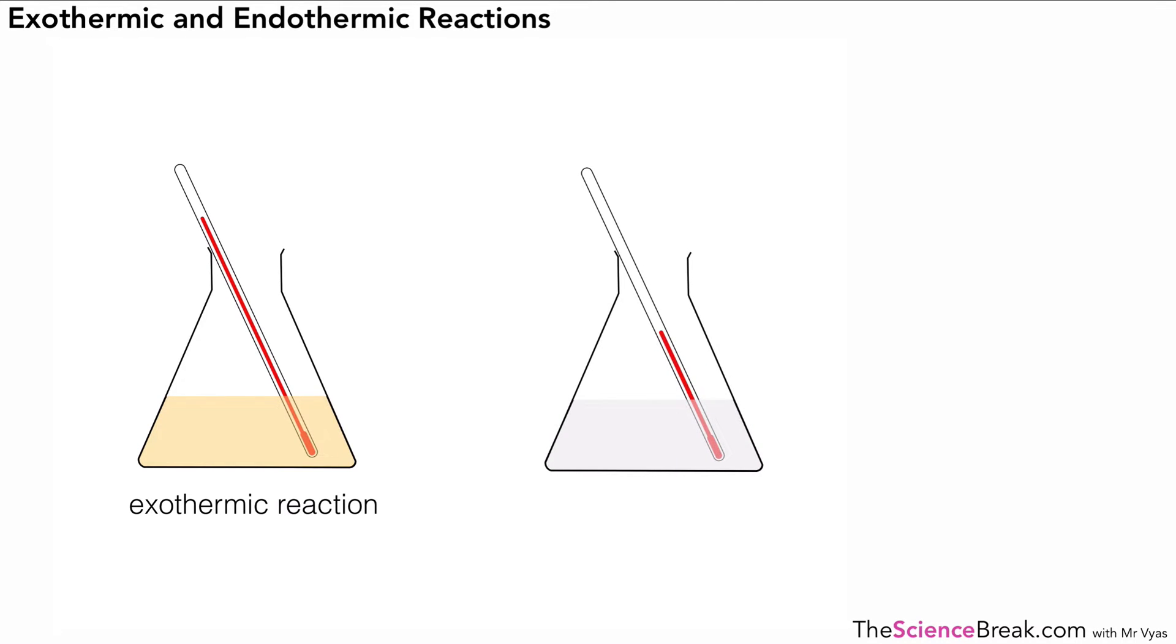We could look at an endothermic reaction as well and you would notice that for this example in our endothermic reaction there is actually a drop in temperature as shown by the thermometer. So this is the difference between the two types of reaction, the exothermic and endothermic reaction.